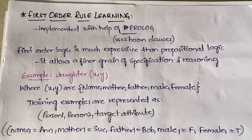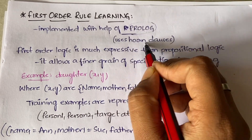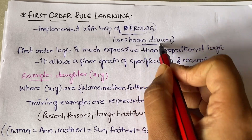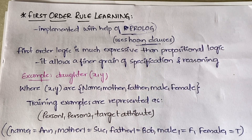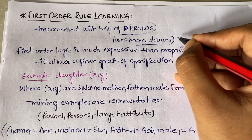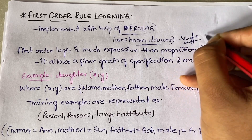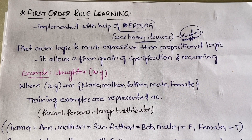You will be implementing this with the help of Prolog. In Prolog we use Horn clauses. Horn clauses simply means that only a single literal is placed in the head of the rule — you use only a single literal in the head of the rule. That is what Horn clauses actually mean.